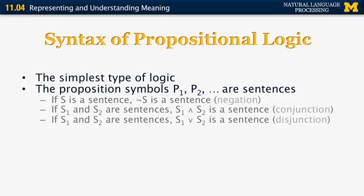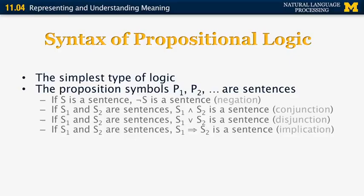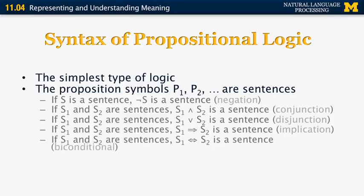This is known as conjunction. If both S1 and S2 are sentences, S1 or S2 is also a sentence. This is known as disjunction. If both S1 and S2 are sentences, then S1 implies S2 is also a sentence. And finally, if both S1 and S2 are sentences, S1 is equivalent to S2 is also a sentence. So this is an example of the biconditional relation.